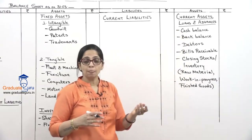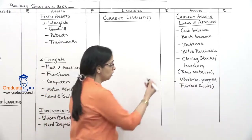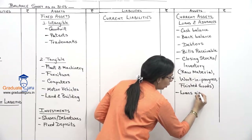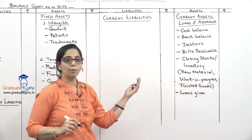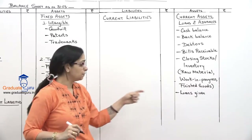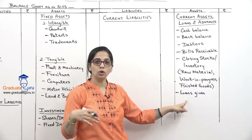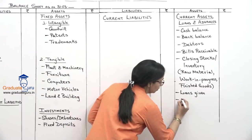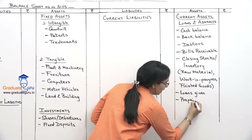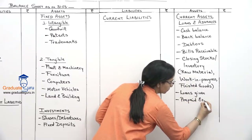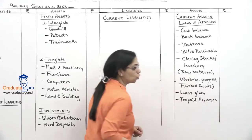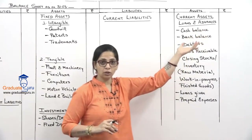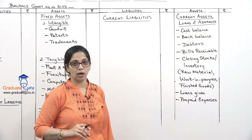Loans and advances — sometimes I give a loan to somebody else, so loans given will also come under this head on the asset side. When I give a loan it is an asset; when I take a loan it is a liability. We also have prepaid expenses — expenses paid in advance — which also come under this head.